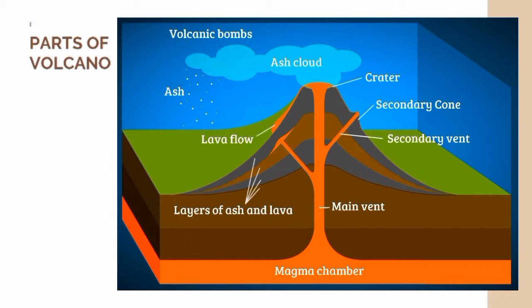Lava is a molten rock or magma that erupted from the volcano. When a volcano erupts, it produces volcanic ash and bombs, forming a volcanic cloud or ash cloud. It consists of small pieces of pulverized rocks, minerals, and volcanic glass. Notice that we also have layers of ash and lava in our parts of the volcano, as you can see in the picture.